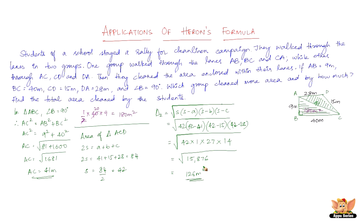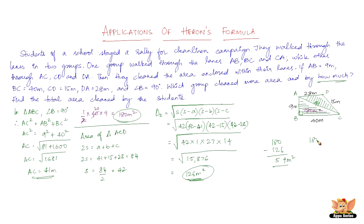The area of the first triangle is 180 square meters and the area of the second triangle is 126 square meters. So the first group cleaned more area. The difference is 180 minus 126 equals 54 square meters. The total area cleaned by both groups is 180 plus 126 equals 306 square meters.